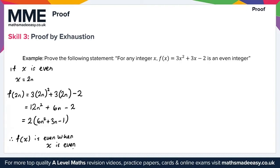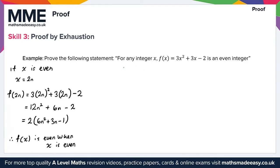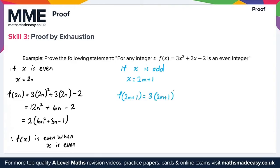Now for the second case, when x is odd. If x is an odd number, we write x = 2m + 1 for some integer m. Then f(x) becomes f(2m + 1), which equals 3(2m + 1)² + 3(2m + 1) − 2.